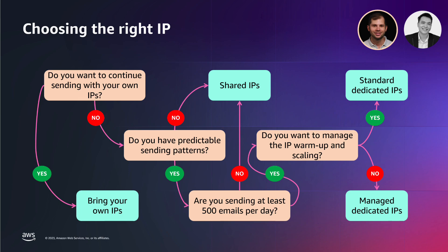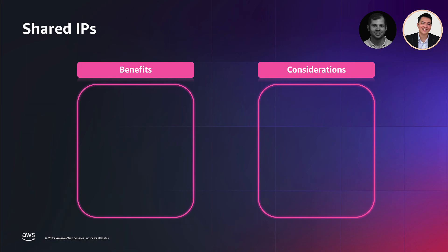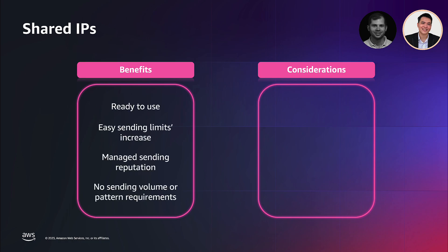Choosing managed dedicated IPs alleviates the overhead of leasing and warming up dedicated IPs yourself. In the following slides, we will look into each IP type in more detail and list some of their key features, benefits, and considerations. Amazon shared IPs is the default option when creating an Amazon SES instance. Shared IPs are already warmed up so you can start using them immediately — ready to use out of the box. You can also increase your sending limits easily via the service quotas console, which has an SLA of up to 24 hours. Amazon SES manages the sending reputation of these IPs and rotates them accordingly, and they have no requirements around sending volumes or sending patterns, making shared IPs ideal for spiky traffic.